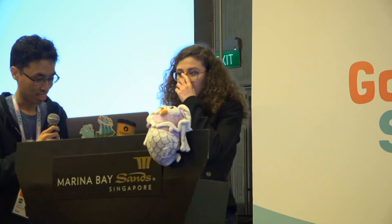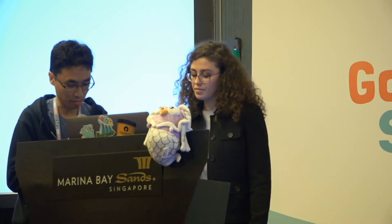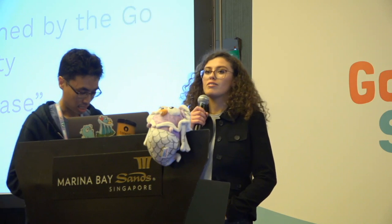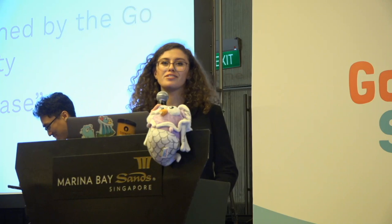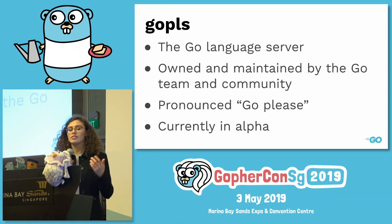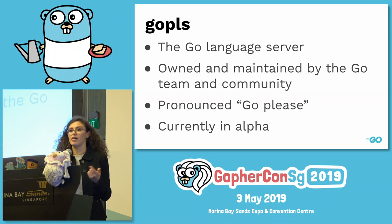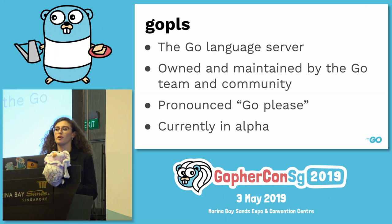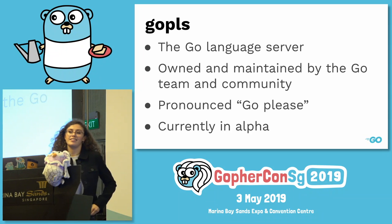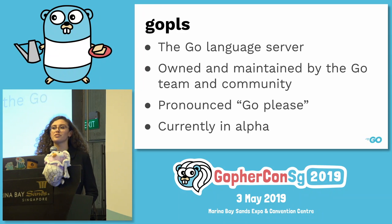Question: How does LSP handle changing files, specifically in the context of Git and changing branches? Right now, gopls doesn't handle that automatically — you have to reload your window if you change branches. In general, the LSP spec provides functions for watching files and getting notified if files change on disk, and that's actually a feature request we have. Gopls really is in alpha — it's working pretty well, but you can't assume it won't break, and we still have a lot of outstanding feature requests we're working on.